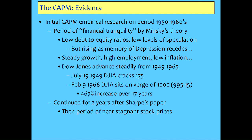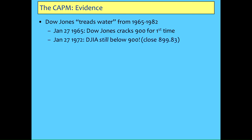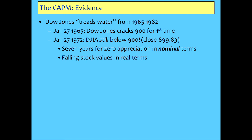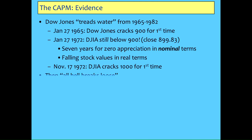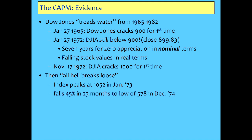Then there was a whole long period where stock prices went nowhere. Looking at 1965 to 1982: in 1965 it cracked 900 points, but seven years later it was still below 900 - going nowhere in nominal terms, let alone inflation-adjusted, and back then inflation was higher. So they were falling in real terms. Then on November 17, 1972, for the very first time it hit through 1,000 points, peaked at 1,052 a couple of months later, and then fell 45% in 23 months. None of this is supposed to happen according to CAPM - a bit of overall volatility, but not a huge reversal like that. Then there were seven years of more stagnation, and then it took off again.